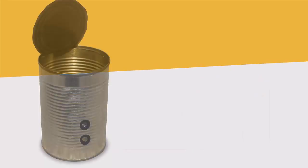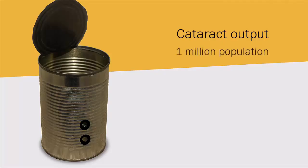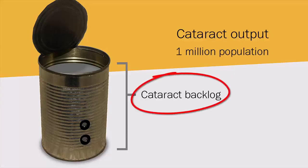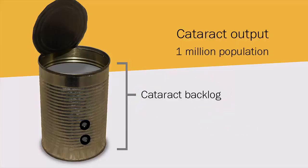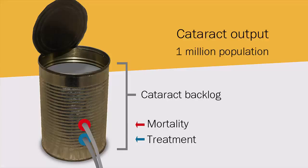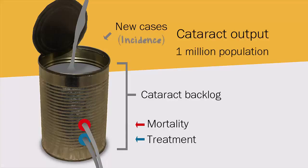We can use the analogy of a leaky can to help us analyze the cataract output situation for a population of one million. Within the can is the cataract backlog — these are all the untreated cases of cataract at present, known as the prevalence. There are two exits from the can: one is to receive treatment, and the other, sadly, is to die blind without ever seeing an eye health worker. We also need to remember that the population is not static, and new cataract cases will develop over time, constantly entering into the backlog. This is known as the incidence of cataract.